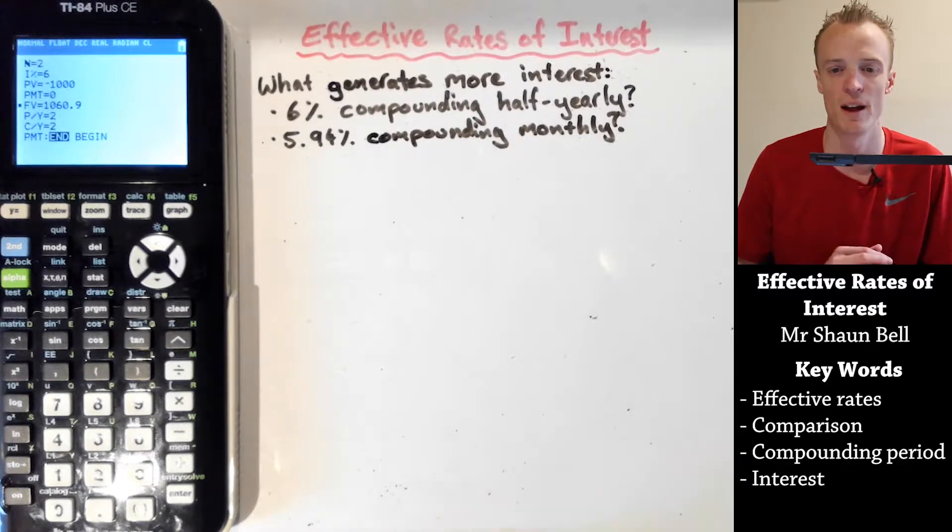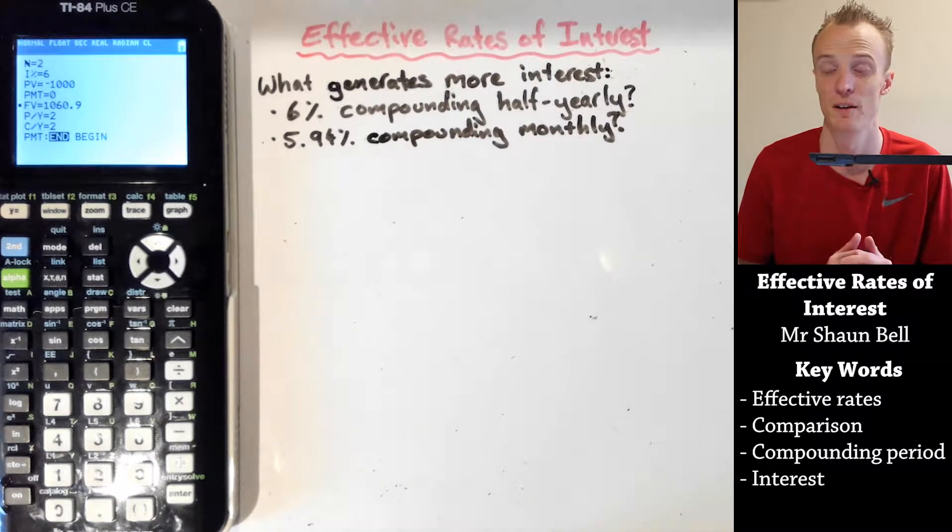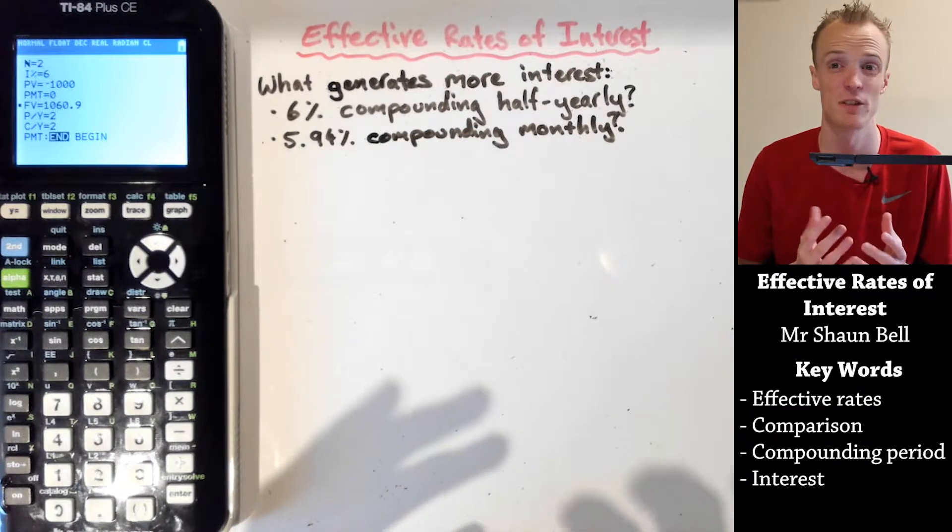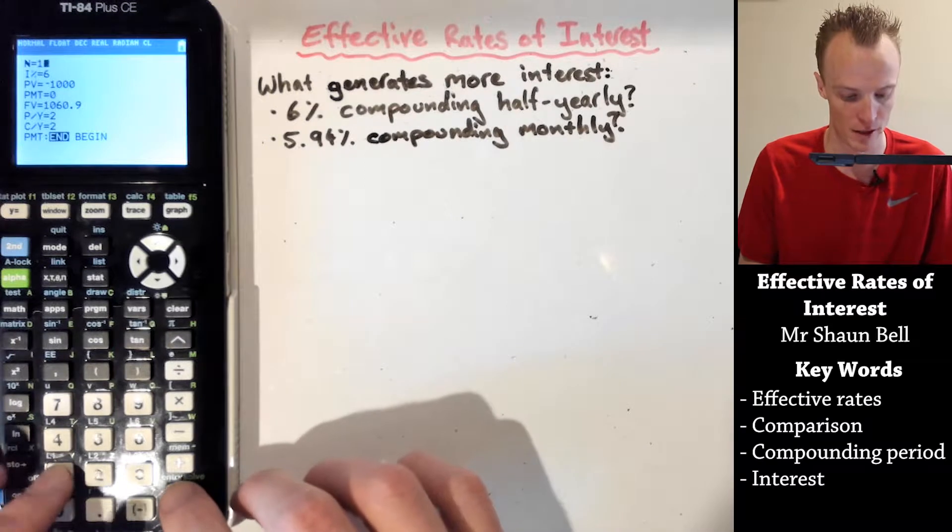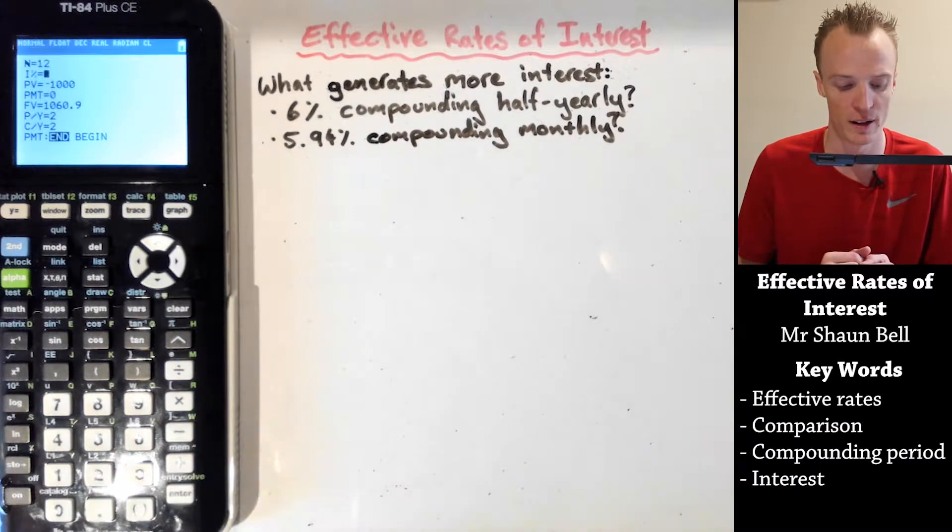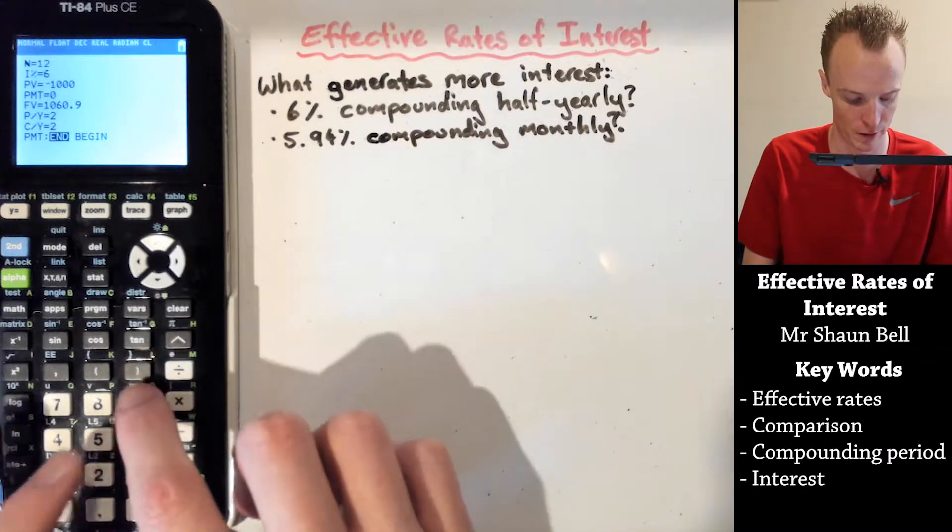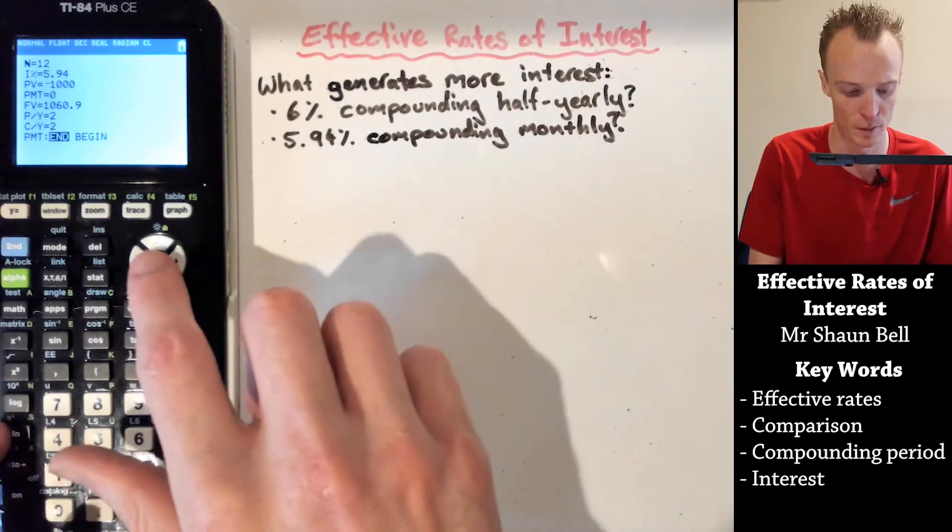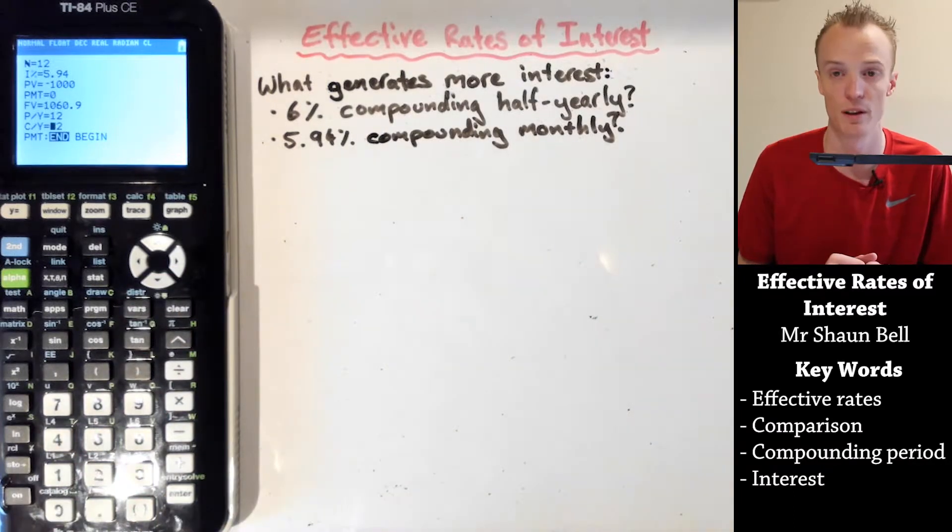But let's compare that to see what happens when we change to a 5.94% interest rate, which means it's generating less interest every time it compounds, but instead we're going to compound it monthly. So the number of times in that one year will be 12 times. Our interest rate is now going to be 5.94%. We're still investing the same amount of money, but the payments and compounds per year will be 12.